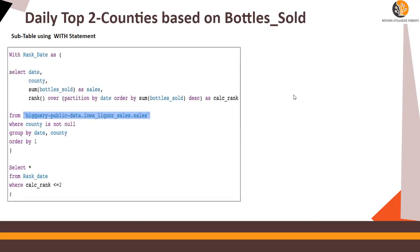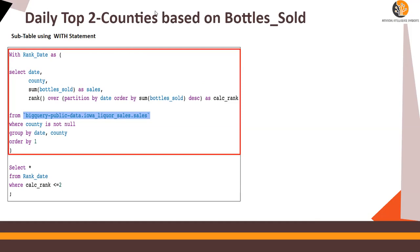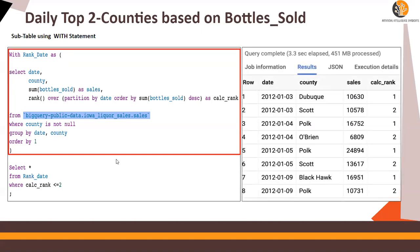Now let's recall the daily top two counties based on bottles sold using the rank function — this is what we did in our previous set of videos. For daily, that means partitioning by date with bottles sold in descending order. The calc_rank was less than two. This was the output using the rank and WITH statement, and we're going to solve the same problem using arrays and structures.